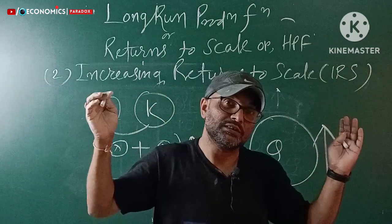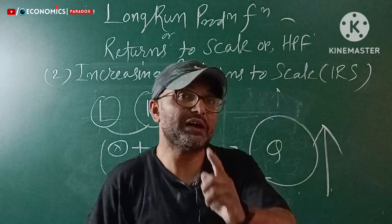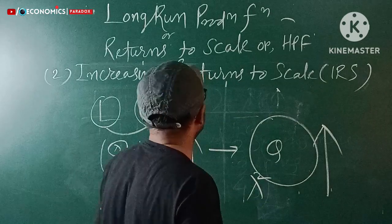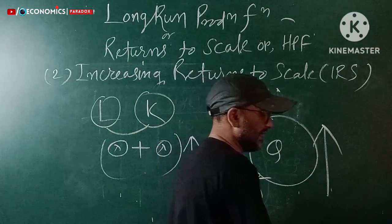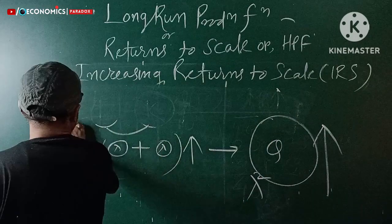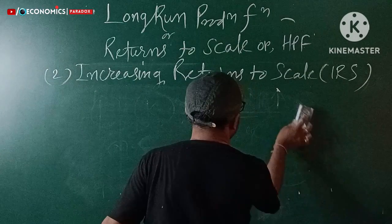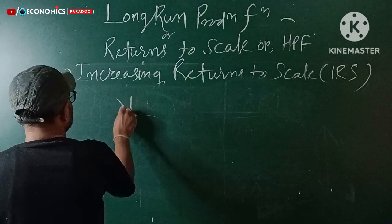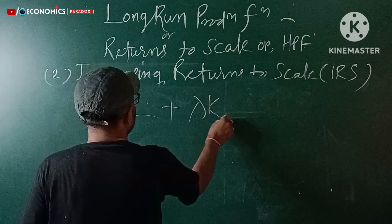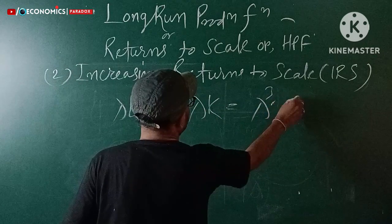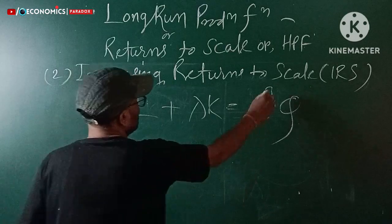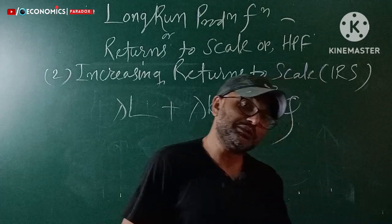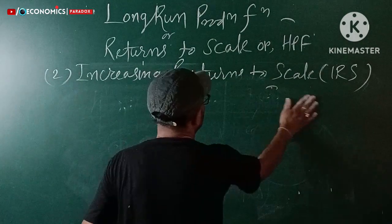This is the concept of IRS — increasing returns to scale. When both factors increase by lambda times, the output increases more than lambda times. If L increases by lambda times and K increases by lambda times, then output increases more than lambda times. This is IRS, and it requires degree greater than one.